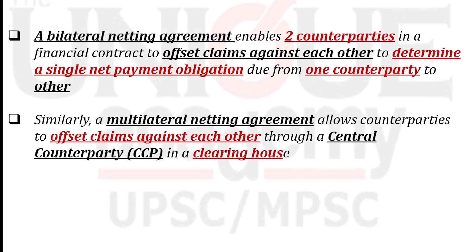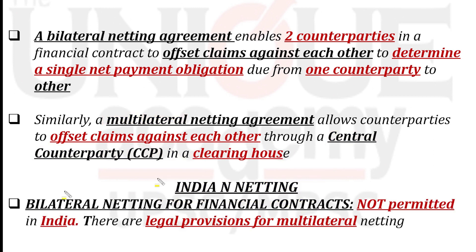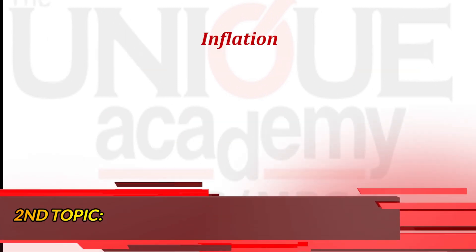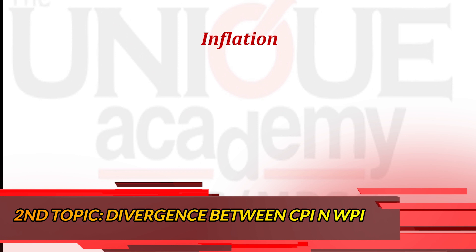When netting is between two parties it is called bilateral netting, and when it is between multiple parties it is called multilateral netting. As far as bilateral netting is concerned, it is not permitted in India — remember that. For multilateral netting, there are a few provisions in India. That covers netting as discussed in the economic survey.